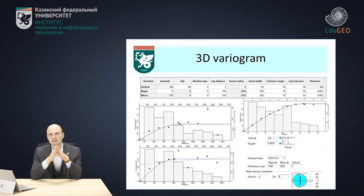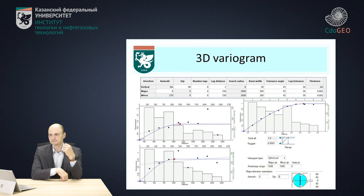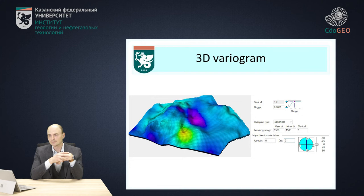Then we're going to obtain these parameters: nugget effect, type of the variogram, and anisotropy range in the major, minor, and vertical directions. That means we need to find five different things. And let's see how it's going to work for our three-dimensional case.